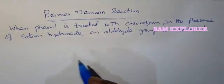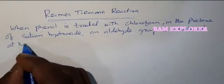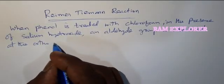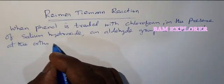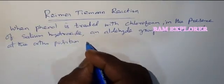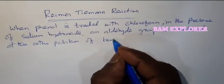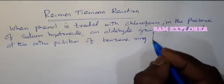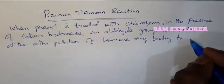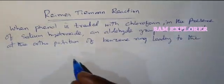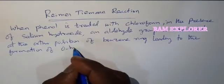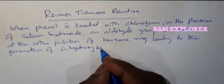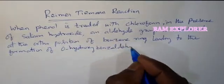When phenol is treated with chloroform in the presence of sodium hydroxide, an aldehyde group is introduced at the ortho-position of the benzene ring, leading to the formation of ortho-hydroxybenzaldehyde.